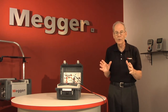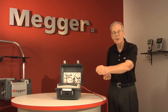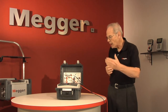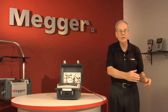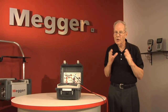When the test terminates, all critical information remains on the display. You can review resistance values at each minute interval and compare the changes in resistance with each voltage increase. Good insulation should stand up to voltage changes with relatively little difference, but deteriorated insulation will show resistance values that drop incrementally each time the voltage is increased, as more flaws come into play passing leakage current.